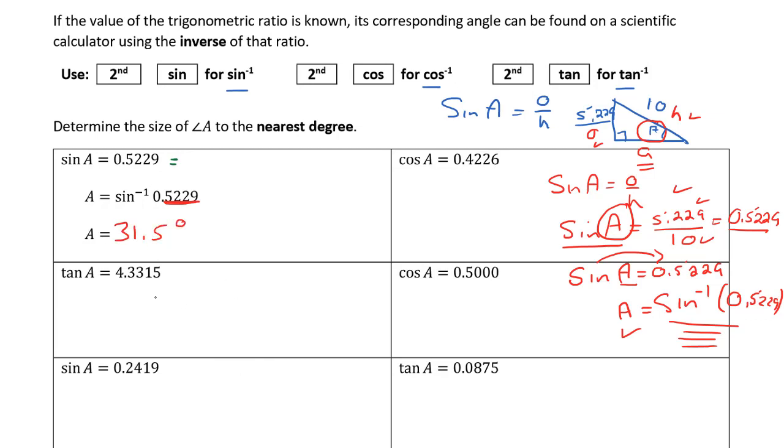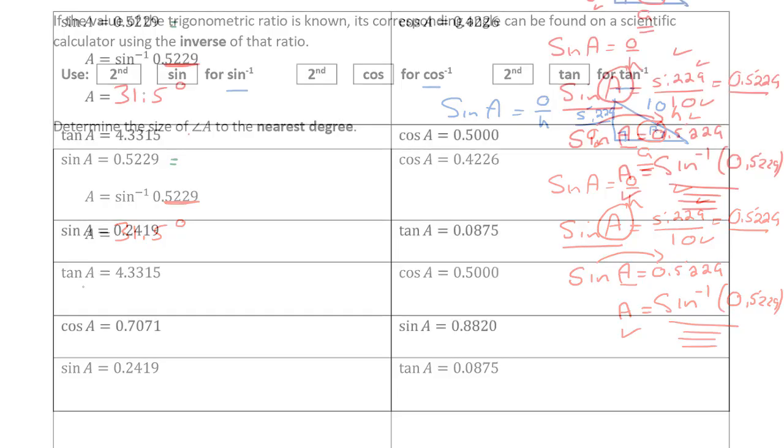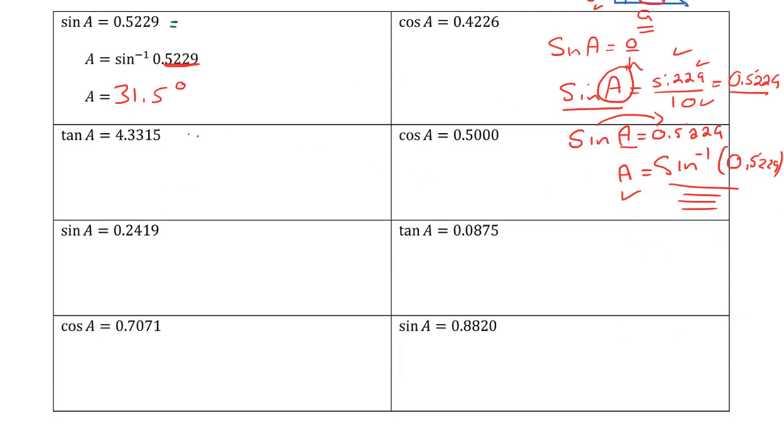That's how we can use our inverse trig functions when given two side lengths in a right-angle triangle to calculate the angles inside. Let's go through the next couple examples and see how to key these in on our calculator.